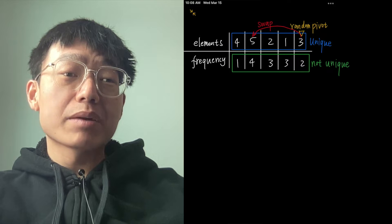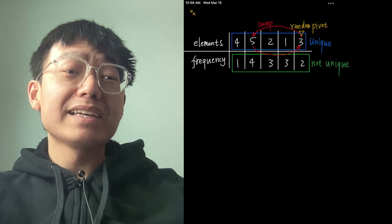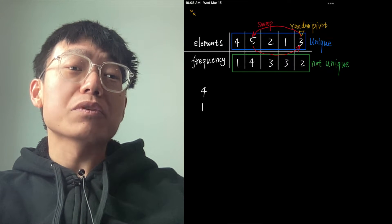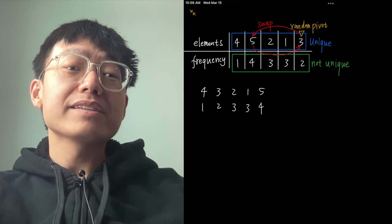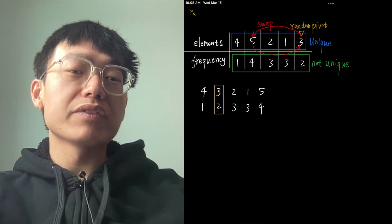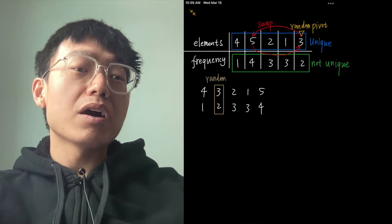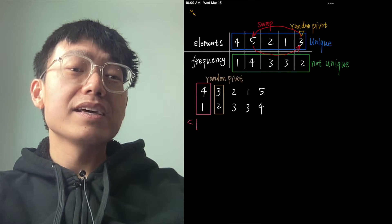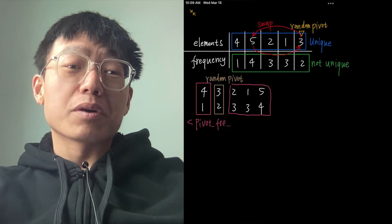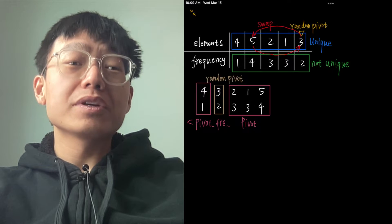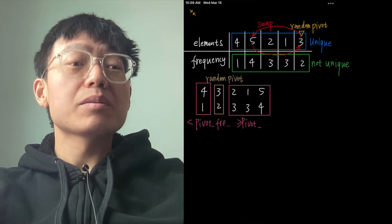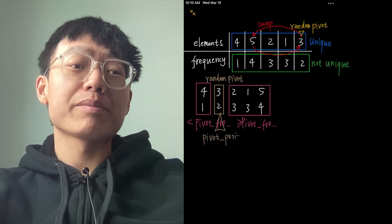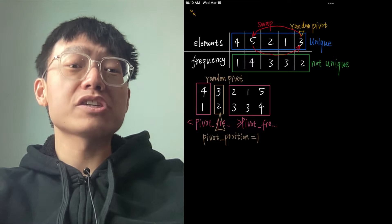It has O(N) average time complexity and is widely used in practice. It is worth noting that the worst-case time complexity is O(N²), although the probability of the worst case is negligible. This approach is the same as Quick Sort — we just choose a pivot and define its position in a sorted array in linear time by using the partition algorithm.